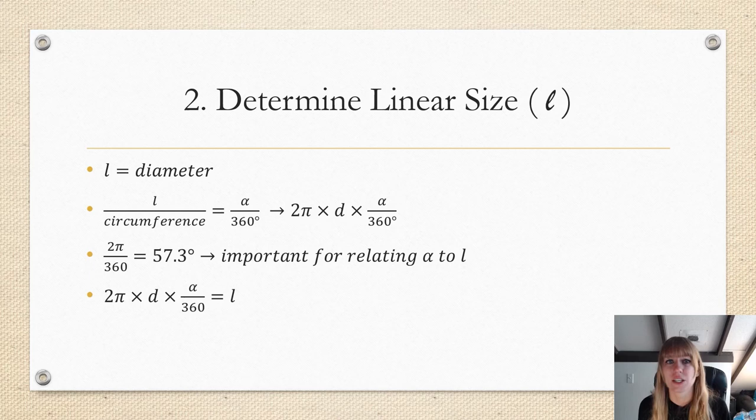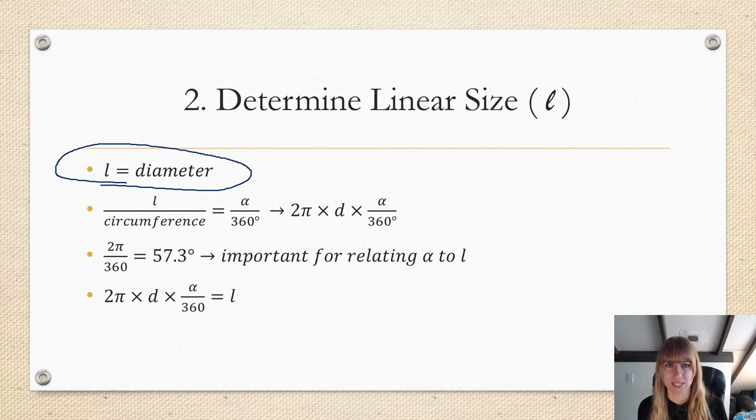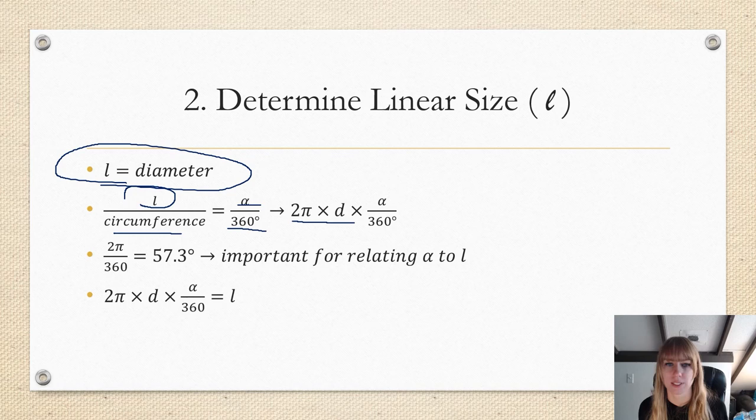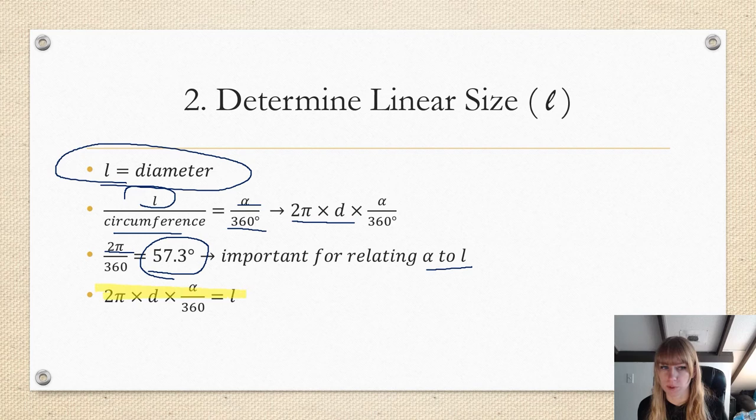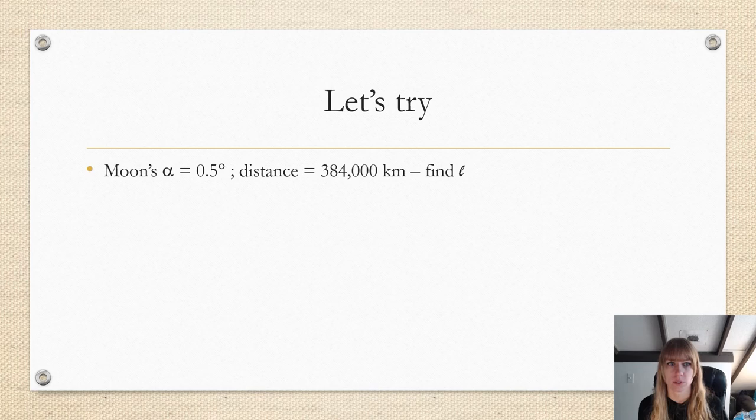Now we have linear size. Linear size is determined by an object's angular size. The L is an object's diameter. So it is known as the angular size formula or small angle formula because it works best for smaller angles, basically things that are more distant. So we do the diameter over the circumference. So if we take 2π over 360, we get 57.3, which is important for relating alpha to L. So overall, this is the formula we use, but it is much easier instead of doing alpha times 2π over 360. It's doing 57.3 times D equals L.